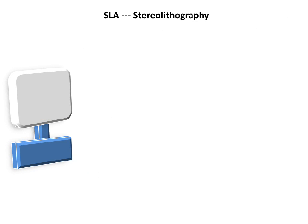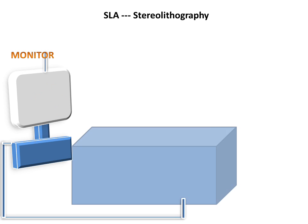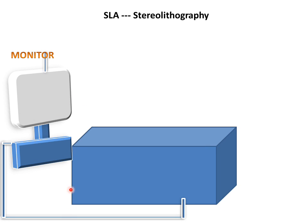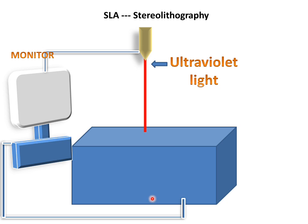Firstly we will discuss the parts of stereolithography. This is a computer monitor on which we make a CAD model. This is attached with a 3D printer, or we can say a rapid prototyping machine. This is a laser in which ultraviolet light is produced, and this ultraviolet light is used in the SLA stereolithography process.